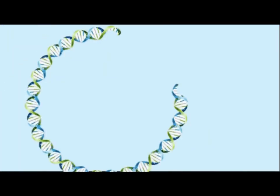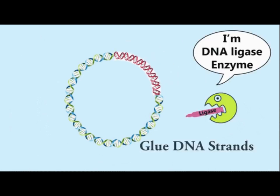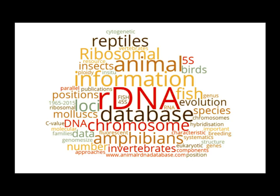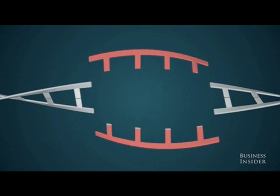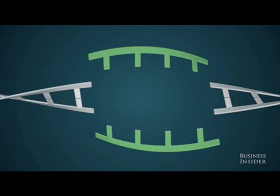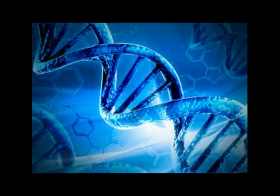Recombinant DNA is the general name for taking a piece of one DNA and combining it with another strand of DNA. Thus, the name recombinant. Recombinant DNA is also sometimes referred to as chimera. By combining two or more different strands of DNA, scientists are able to create a new strand of DNA. The most common recombinant process involves combining the DNA of two different organisms.